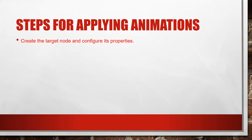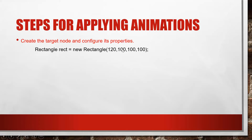For animation, the first step is to create the target node and configure its properties. For example, declare your geometric symbol first — like a Rectangle class where 'rect' is the object: new Rectangle() with components x, y, width, and height.